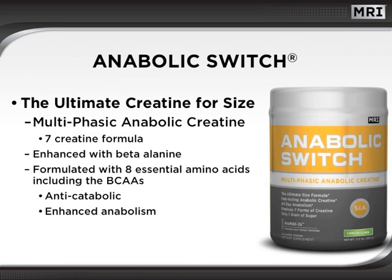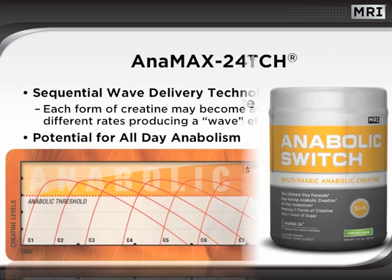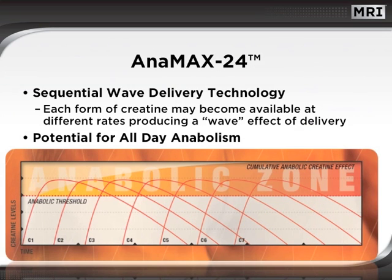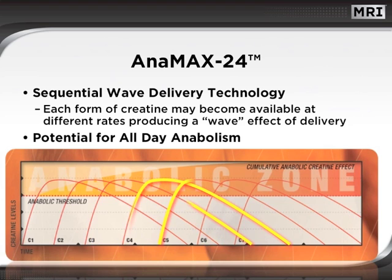For those seeking maximum size and strength, MRI formulated Anabolic Switch, the ultimate creatine for size. Anabolic Switch incorporates a multiphasic anabolic creatine formula comprised of 7 distinct forms of creatine. Additionally, Anabolic Switch is enhanced with beta-alanine and 8 essential amino acids, including the branched-chain amino acids. This may help to minimize muscle catabolism while supporting enhanced anabolism. Anamax24 is the sequential wave delivery technology in Anabolic Switch. Because each creatine may become available at varying rates, a wave effect of sustained creatine delivery may be produced, increasing the potential for prolonged anabolism.